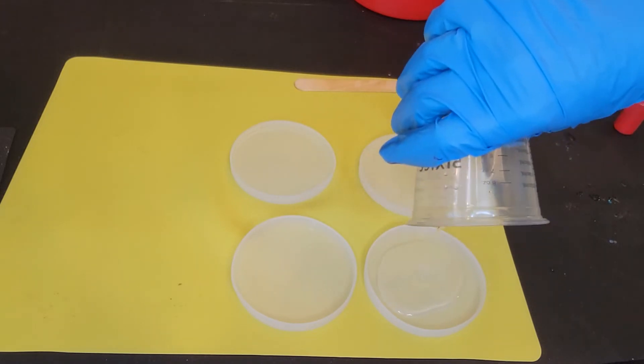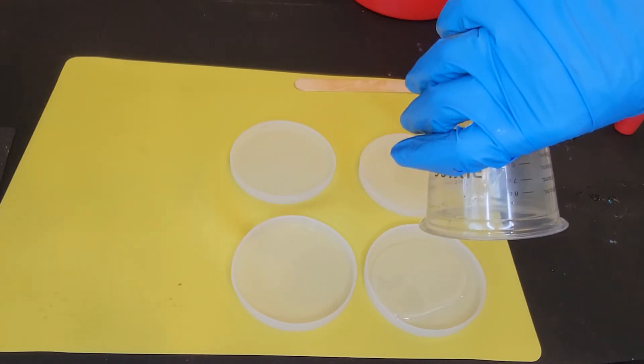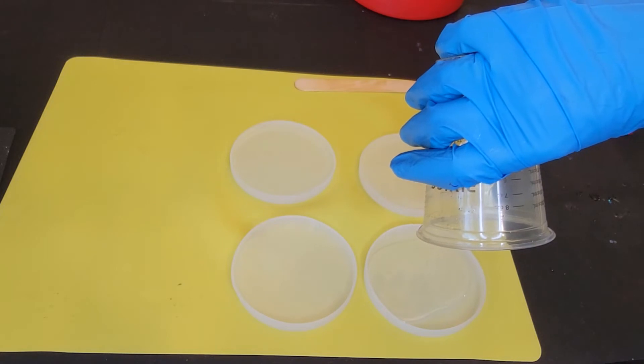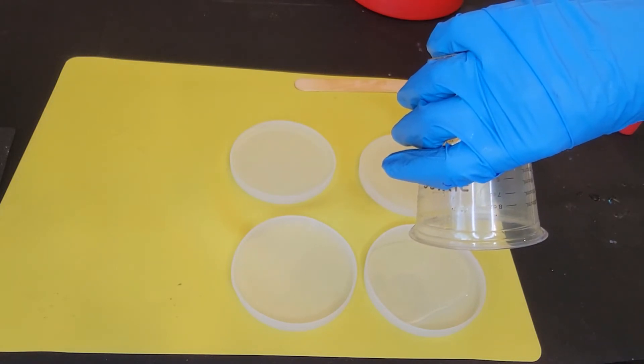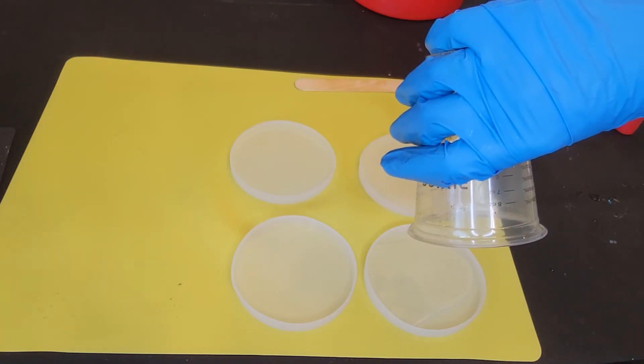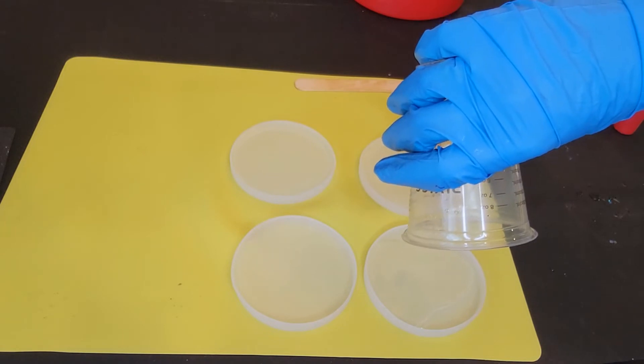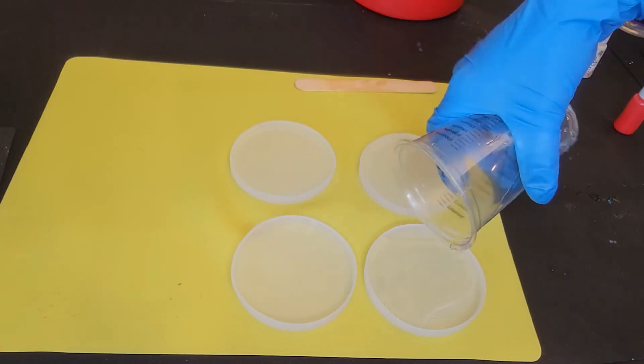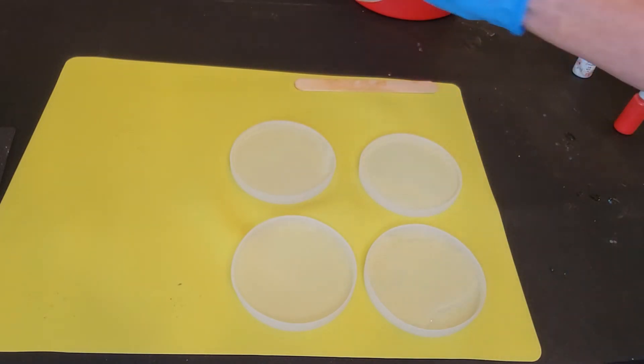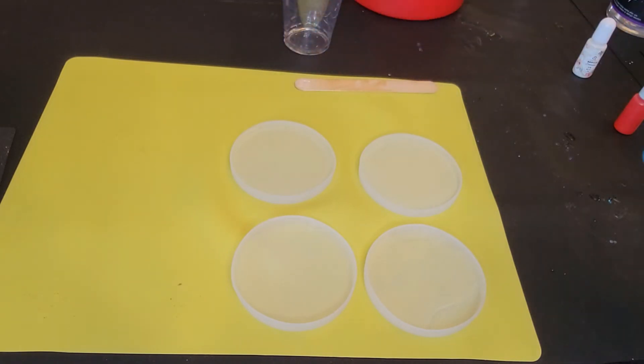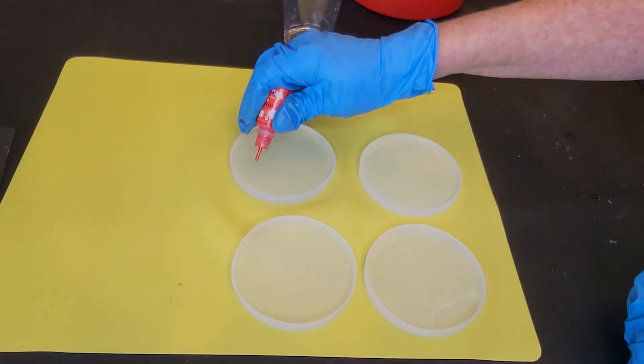And it's best if you don't overflow your mold because then you've got edge mess to clean up. Well, I didn't quite have enough for the third one. And I'm not going to scrape the bottom and the sides of my mixing cup because there can be some unmixed resin in the bottom there.